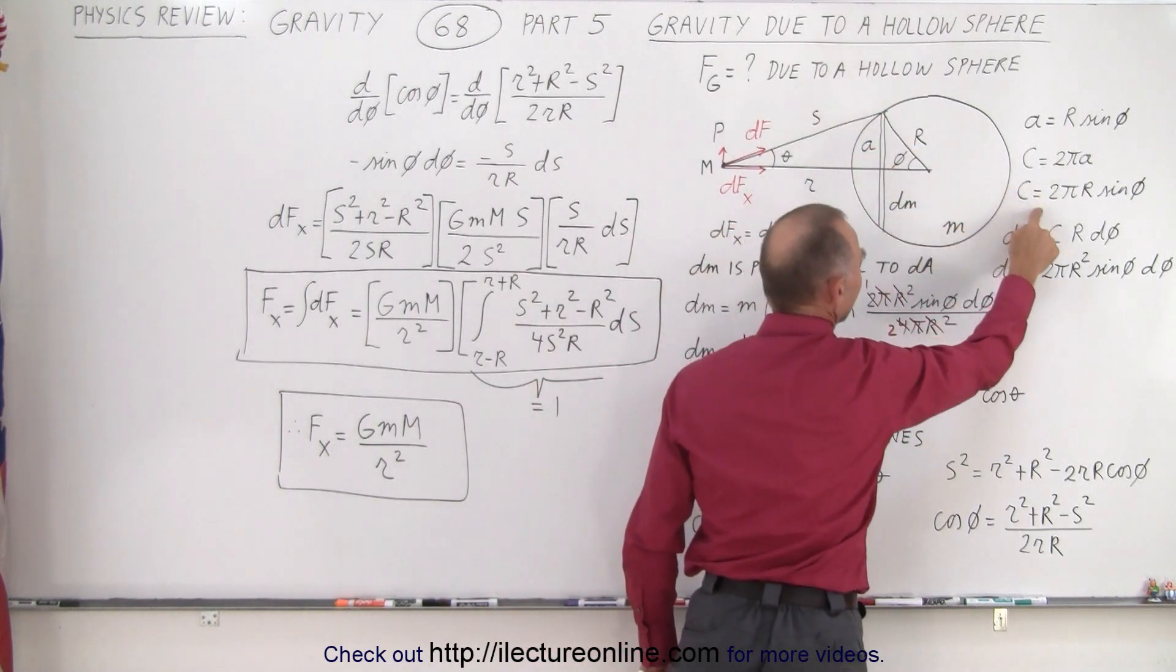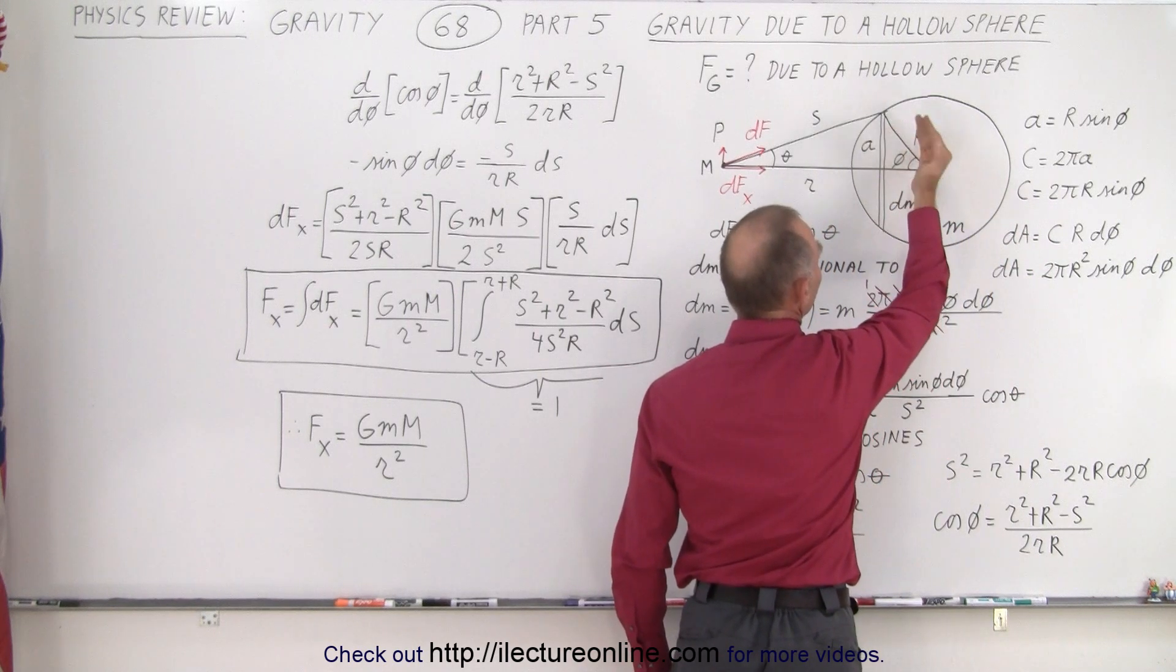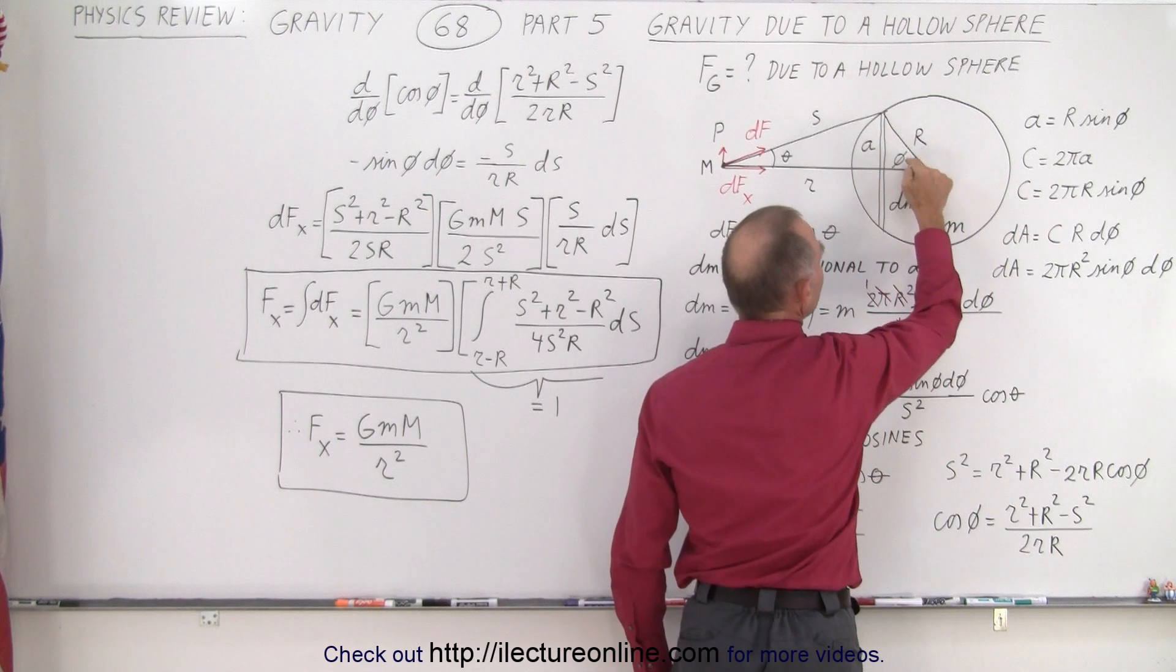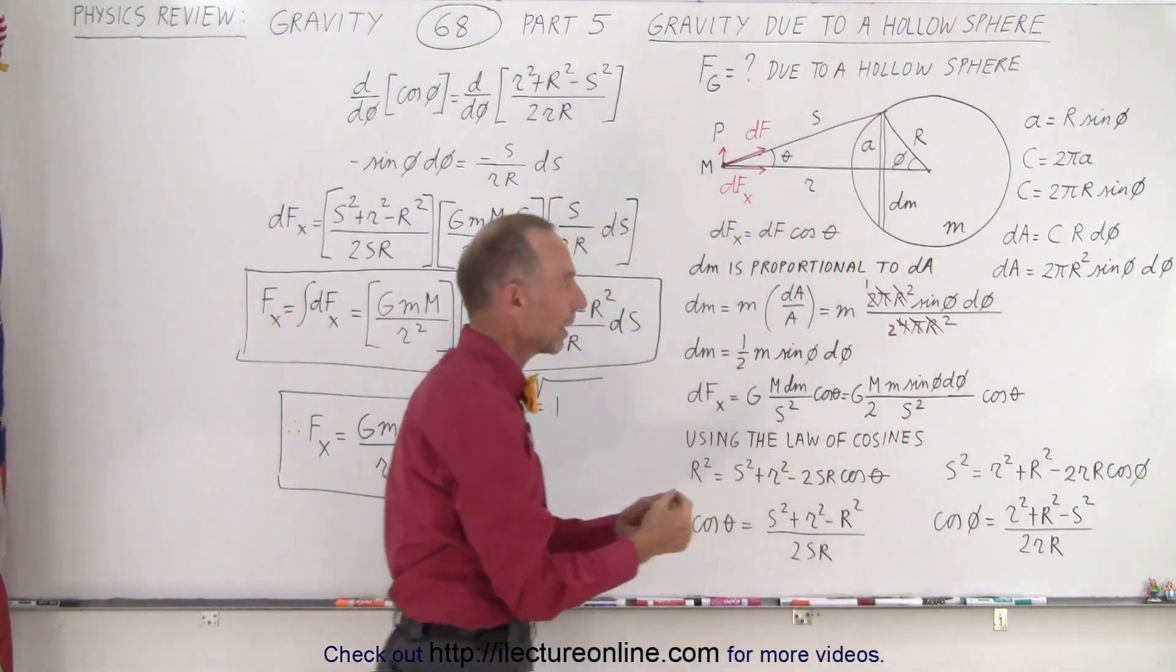first of all, the circumference of that band, and then the area of the band, realizing that the thickness of the band can be defined by R d phi, the angle right here, that will be the thickness of the band. And so this is the area of that band.